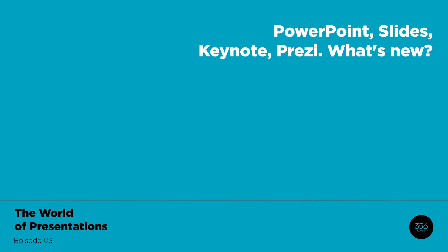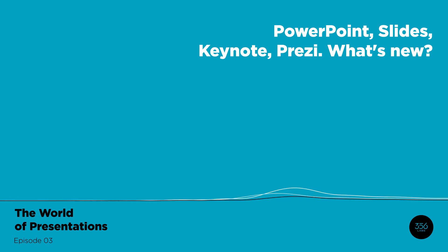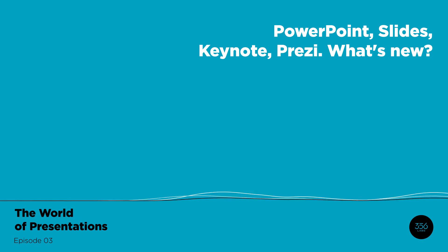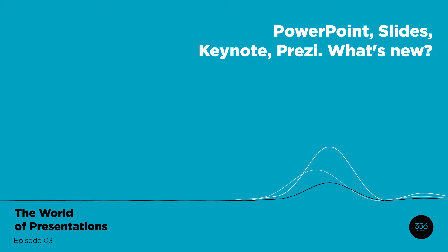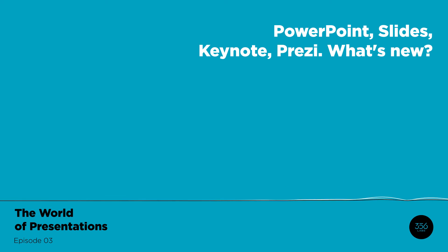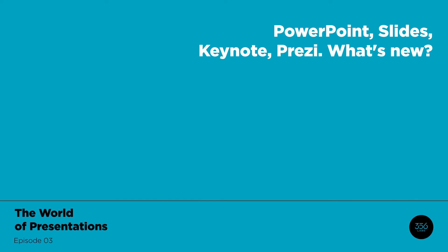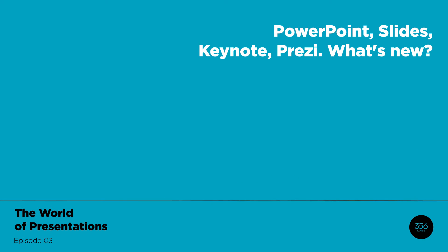Inking and designer also got some improvements. Now you can write with your pen, do bullet points with the pen, and PowerPoint will recognize that and convert that digital ink — as Microsoft calls it — to editable bullet points. Then the designer feature will also suggest various layouts for how your slide can look. There are also improvements like being able to insert Microsoft Forms inside, and you now have the editor that helps you with wording, grammar, and spelling.